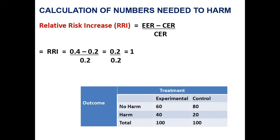Relative risk increase is calculated by the formula: experimental event rate minus control event rate, divided by control event rate. That is 0.4 minus 0.2, divided by 0.2, which equals 1. In other terms, there is a 100 percent increase in the control event rate because of the experiment. The control event rate was 20 percent and it became 40 percent — that is double the increase, or a 100 percent increase.